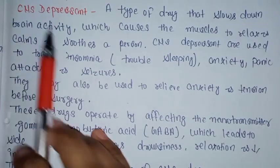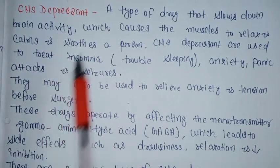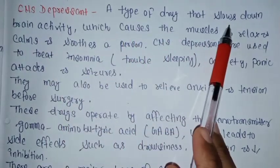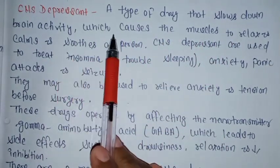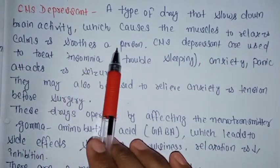Hello dear student. CNS Depressants is a type of drug that slows down the brain activity which causes the muscles to relax and calm and soothes a person.